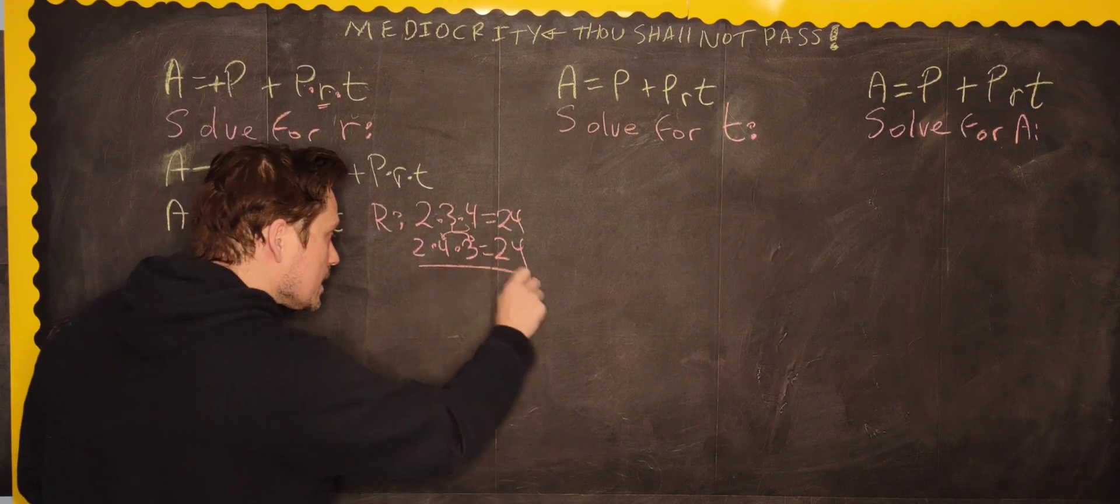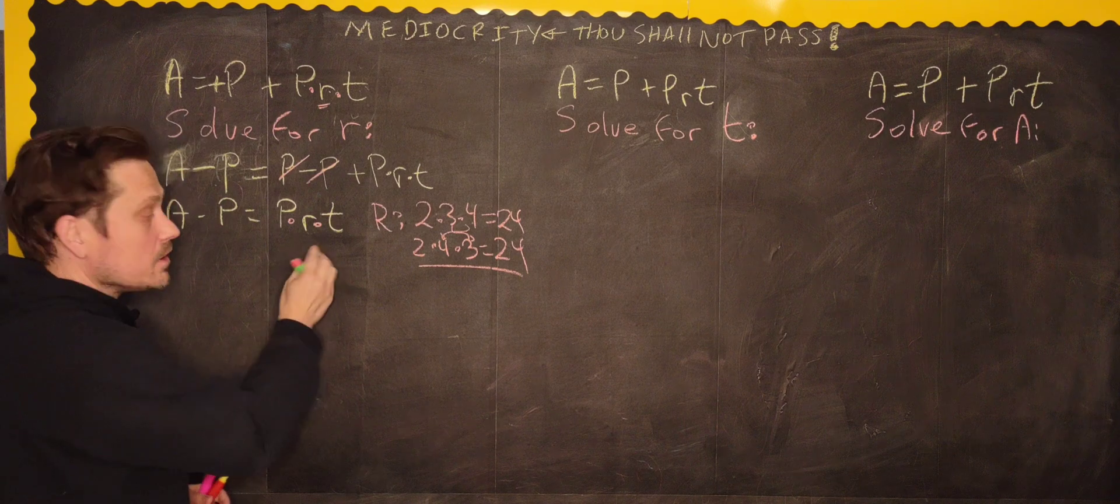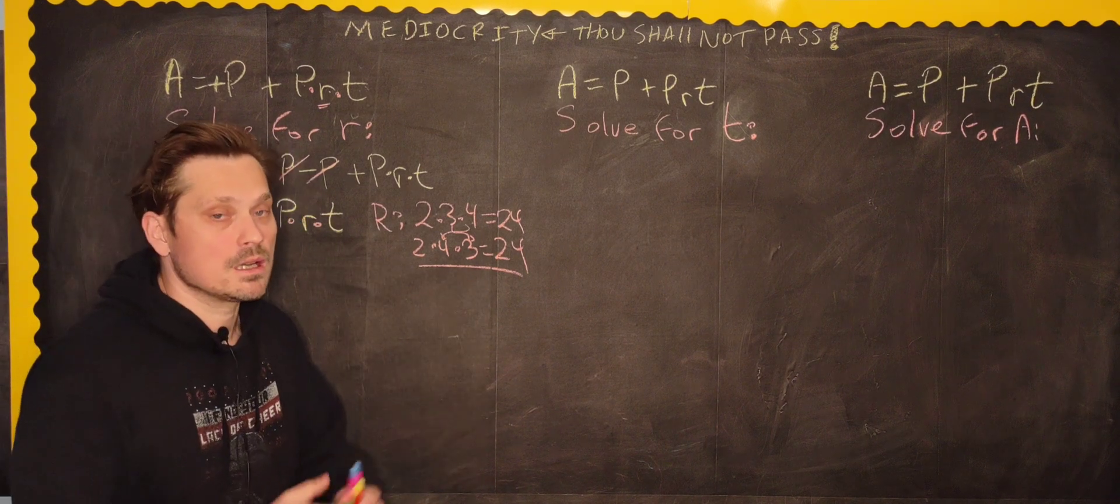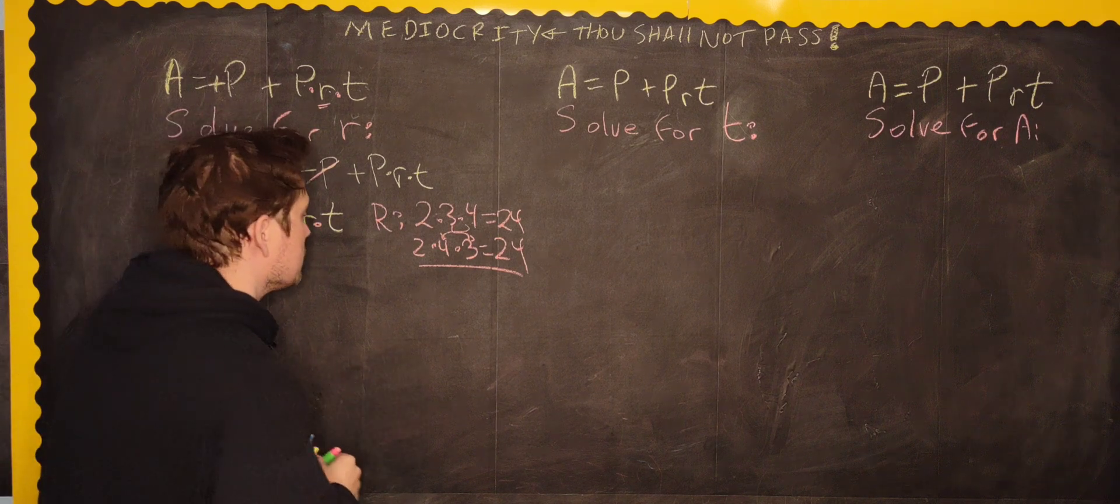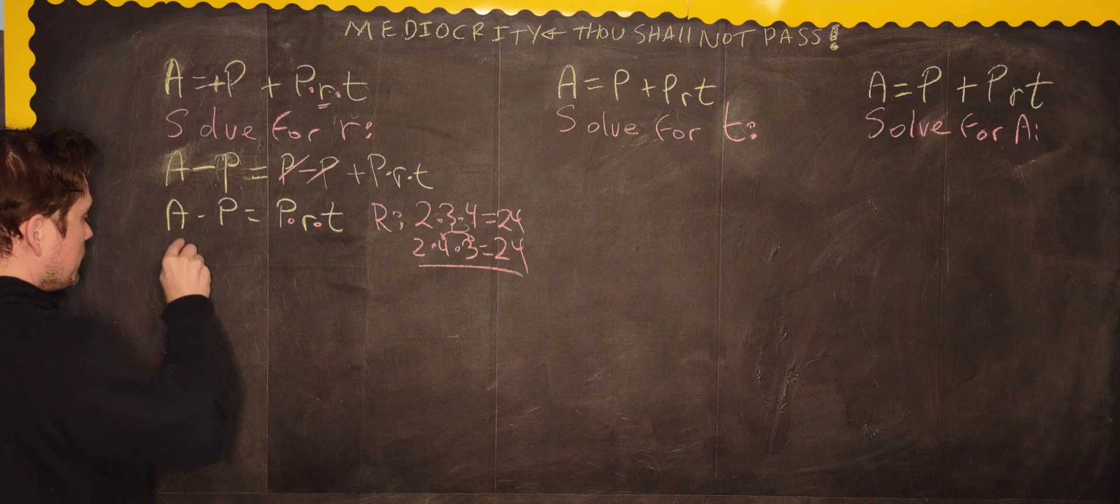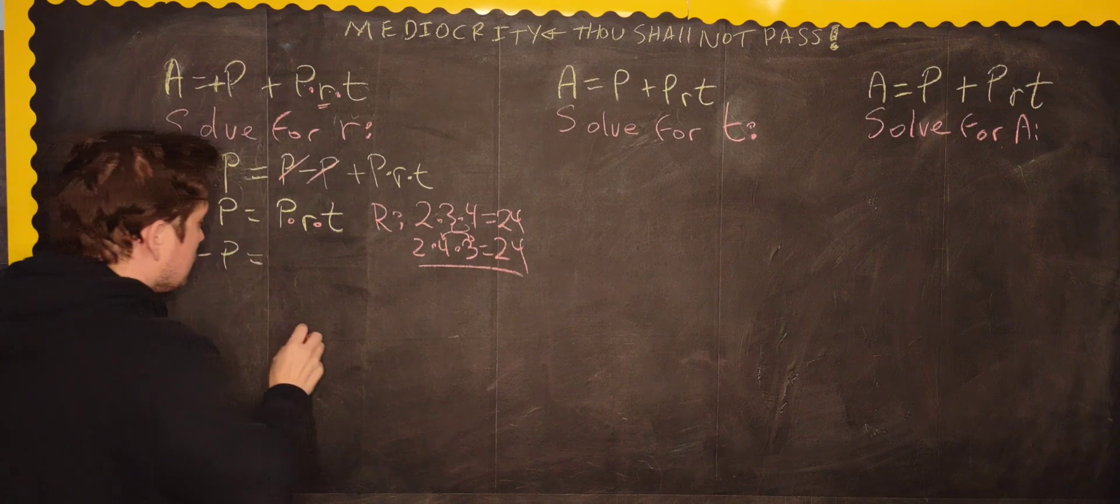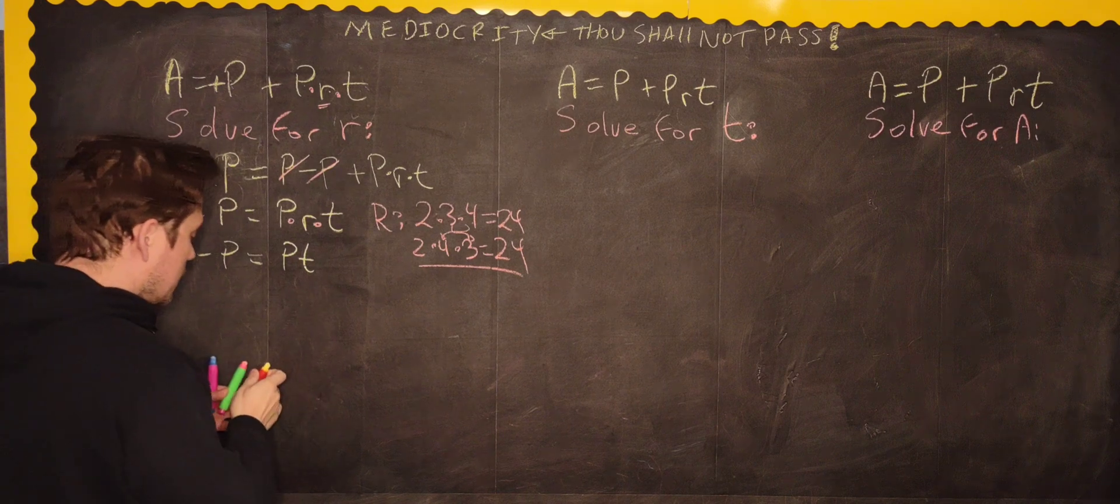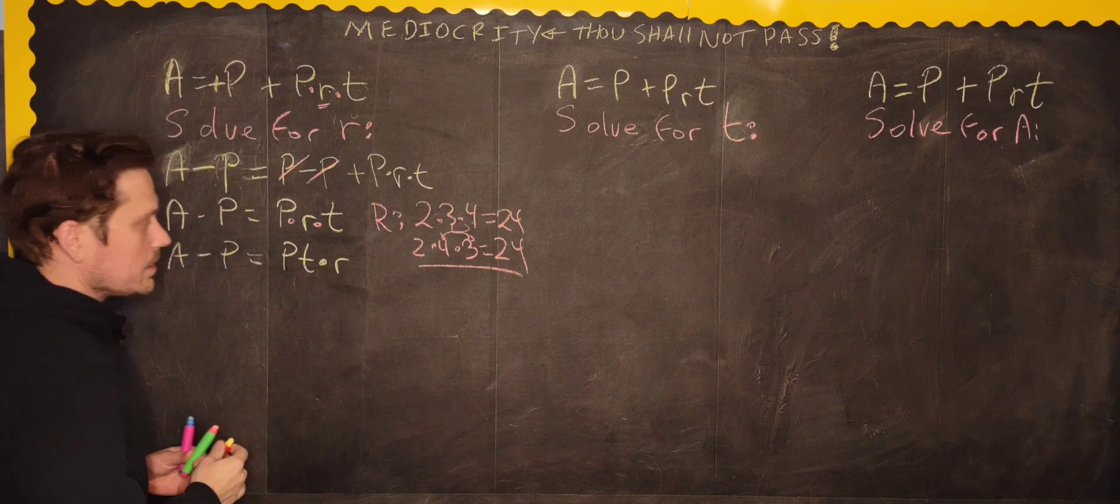The question is, can this be applied here, even though this involves variables and this has specific numerical values? Yes, the same logic applies. So what I can do is the following. I can say A minus P is equal to, and just group the P and the T together, and then kind of keep the R separate off to the side.